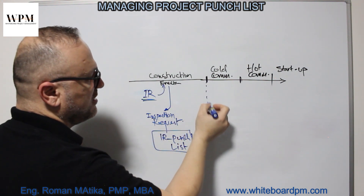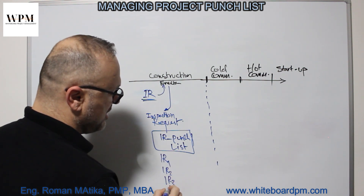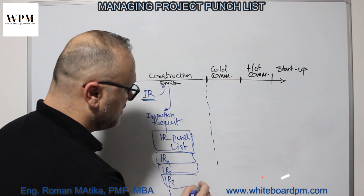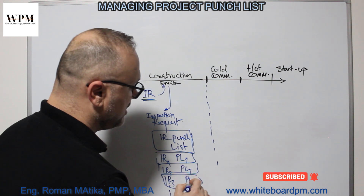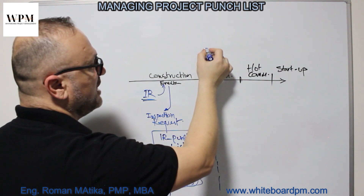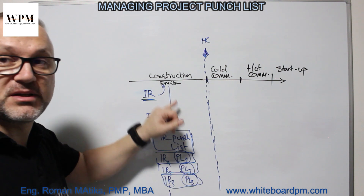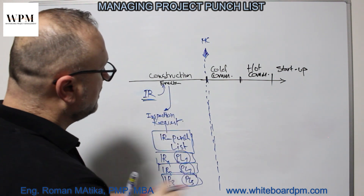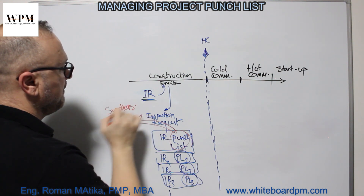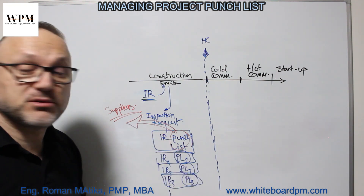By the end of the construction we have IR1, IR2, IR3, and so on. We have many inspection requests, and in each inspection request we have punch list 1, punch list 2, punch list 3, and others. All those punch lists are completed once the construction phase is ready and we have the milestone of mechanical completion. Once we have mechanical completion, all punch lists must be ready. Some punch lists need to be reported to our suppliers — some items are not supplied properly, or materials are not according to specifications.